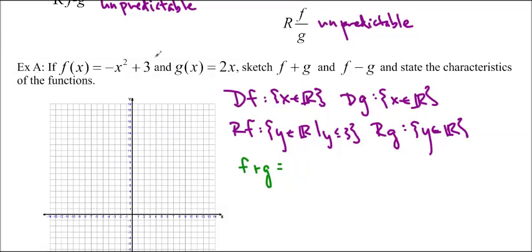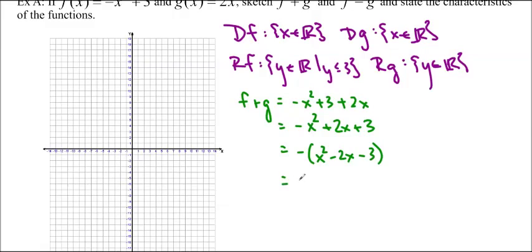So f plus g, we're just going to add the two algebraic expressions together. So negative x squared plus 3 plus 2x. And we could rearrange that to be in standard form. The reason I'm doing that is because I do need to graph it. You can see that it ends up being a parabola, and that's something that we know how to graph. So negative x minus 3 and x plus 1. You should know how to graph parabolas. If you don't, then you need to go practice.